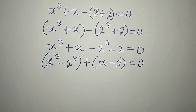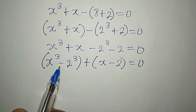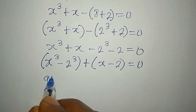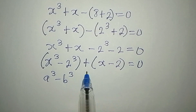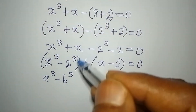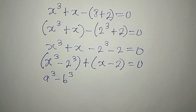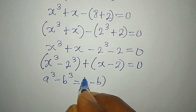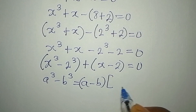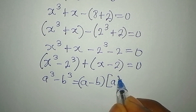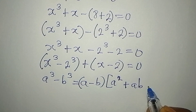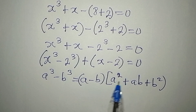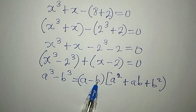Remember that if you have the difference of two cubic terms, this is what you do — as an illustration: a³ minus b³ equals open bracket a minus b, close bracket, then in the other bracket you have a squared plus ab plus b squared.